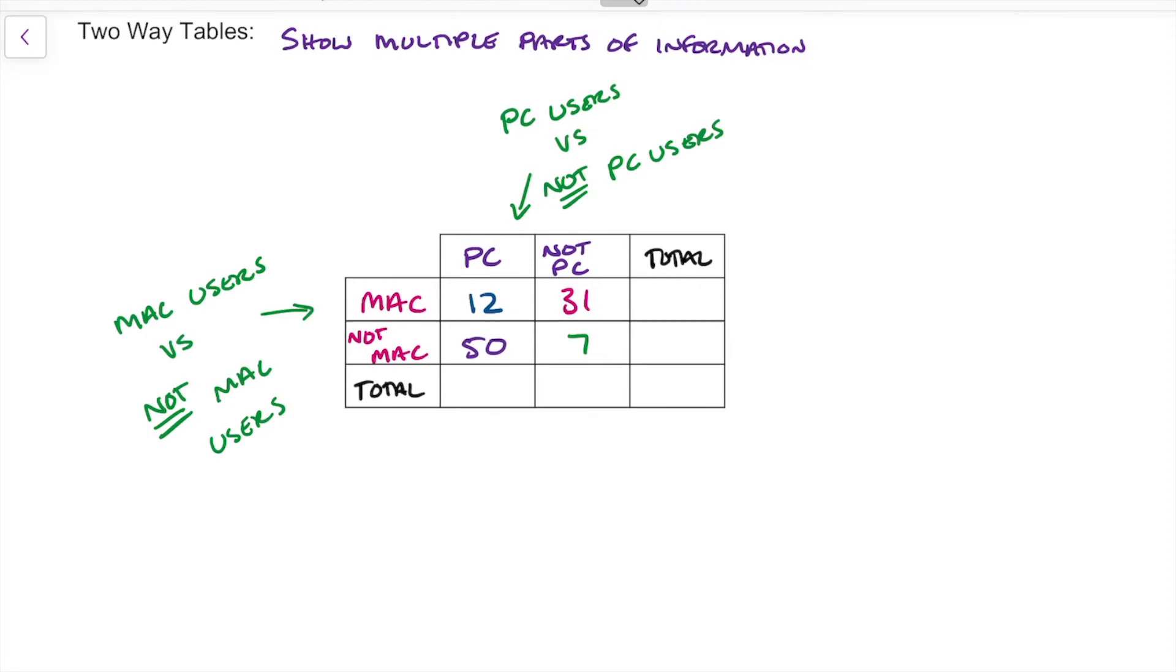Next thing we need to do is we need to add everything up. So if we add across and down, each column, each row gets added together.